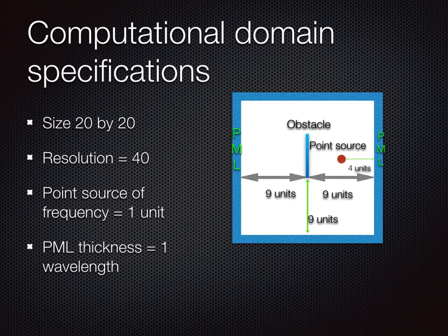Finally, we need to put an absorbing boundary condition around our domain, which ensures that no waves are reflected from the boundary. This is achieved by using perfectly matched layers of thickness 1 wavelength.